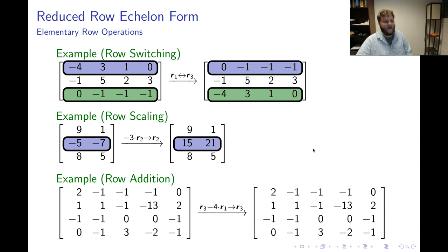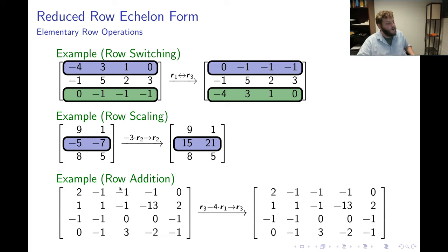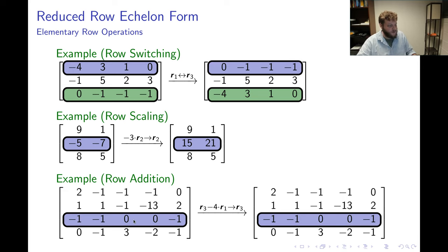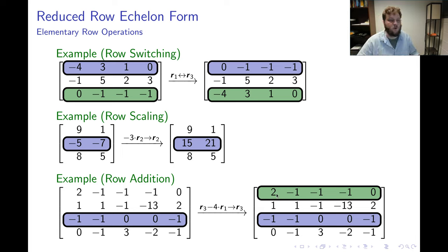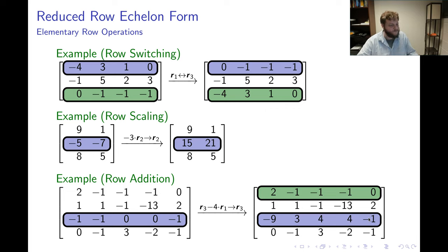For row addition, I use a scalar multiple of one row to change another row. Here I'm doing row addition on a 4×5 matrix — the notation says I'm about to take row 3 and subtract 4 times row 1 from it. Going entry by entry in row 3 and subtracting 4 times the corresponding entry in row 1: negative 1 minus 4 times 2 equals negative 9, and the rest of the arithmetic carries throughout row 3.